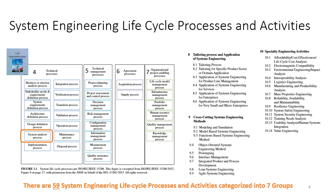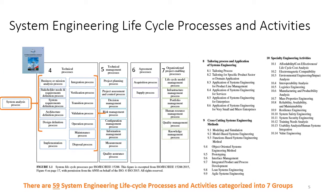The system analysis process is kind of an oddball process. It is a cross-cutting process and a means of performing quantitative assessment that is used to support the other technical processes. For example, if you are doing a system design definition process and you have two alternative architectures, the system analysis process is the way that you would compare the different architectures. So systems analysis process is this cross-cutting process used in all the other processes.